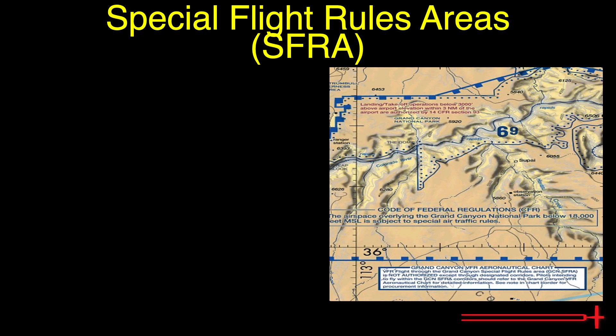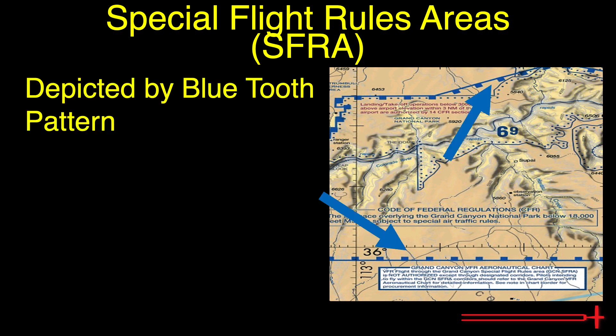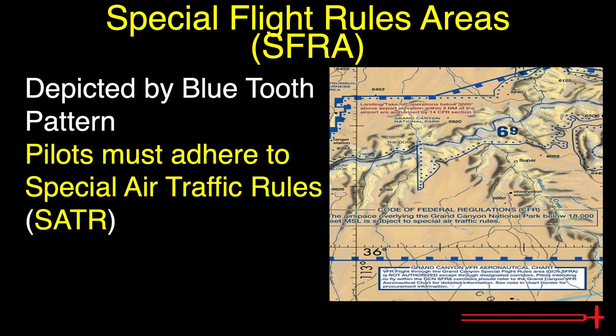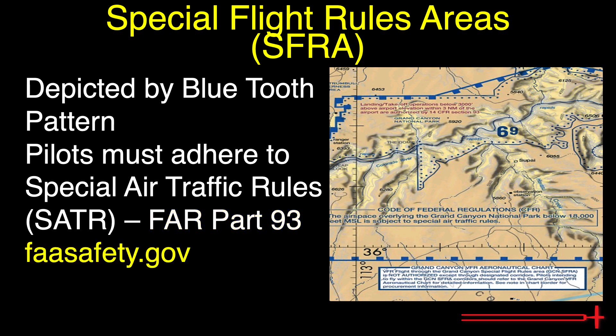Special flight rules areas boundaries are depicted on VFR charts by blue castle top or tooth patterns. Within these boundaries, pilots must adhere to special air traffic rules. These rules are listed in FAR Part 93. Additional information and procedures regarding individual special flight rules areas can be researched at faasafety.gov. This concludes today's video covering special flight rules areas.